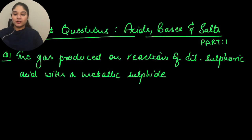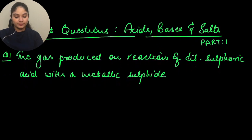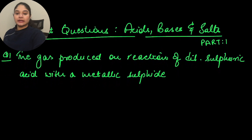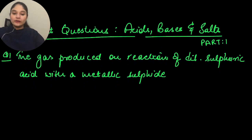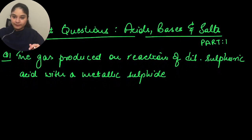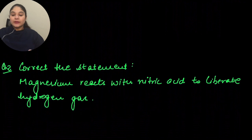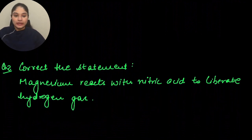The screen is clearly visible. The first question asks: what is the gas produced on reaction of dilute sulfuric acid with a metallic sulfide? The answer is hydrogen sulfide. The next question asks to correct the statement: magnesium reacts with nitric acid to liberate hydrogen gas.